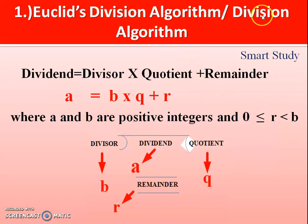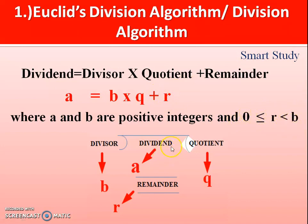In Euclid's division algorithm, dividend equals divisor into quotient plus remainder: A = BQ + R. Here A and B are positive integers — they should not be negative. The remainder R should lie between 0 and B, meaning R is greater than or equal to 0 and less than the divisor B. So dividend is A, divisor is B, quotient is Q, and remainder is R.